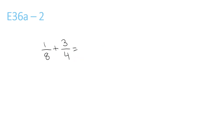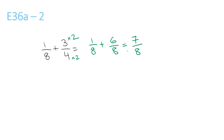This one here, the LCM of 8 and 4 is still 8, because that's the number they both go into. This stays as 1 over 8, plus 4 times 2 is 8, so you have to times the 3 by 2 to get 6 over 8, equals 7 over 8.